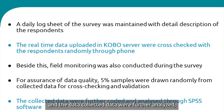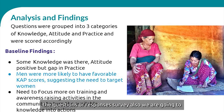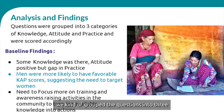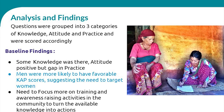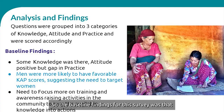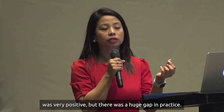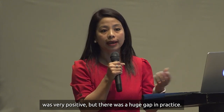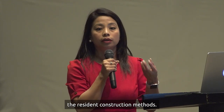Data were further coded and analyzed through SPSS software. For the risk perception survey analysis, questions were grouped into three categories: knowledge, attitude, and practice. Different weights were given and scores assigned accordingly. The baseline findings showed there was some knowledge in the community and attitudes were very positive, but there was a huge gap in practice — people were not practicing earthquake-safe behavior or resilient construction methods, and were not complying with the building code.